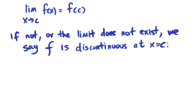So a function is continuous if the limit exists and the condition above is true, and if not, then it's discontinuous.